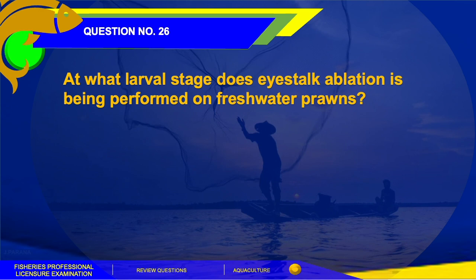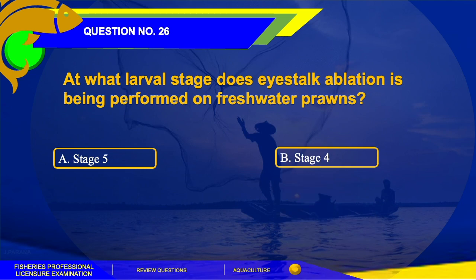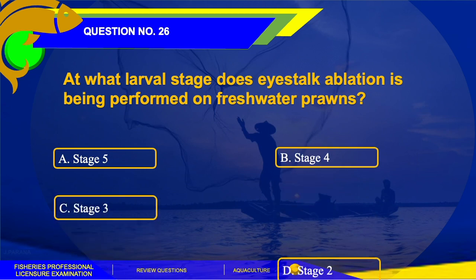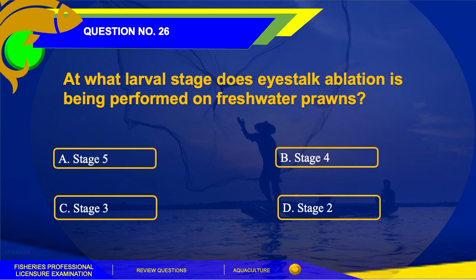Question number 26. At what larval stage is eyestalk ablation performed on freshwater prawns? The options are: A. Stage 5, B. Stage 4, C. Stage 3, or D. Stage 2. The answer for this question is letter D, Stage 2.